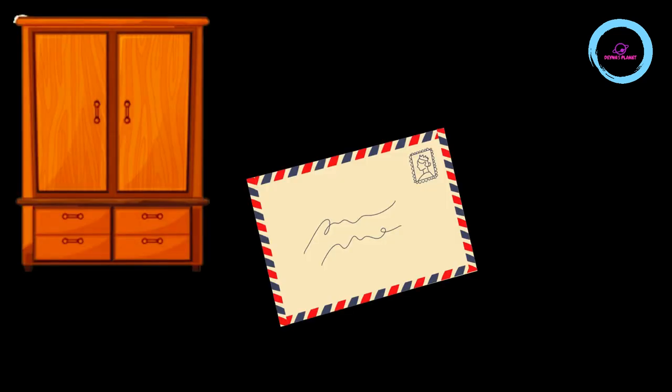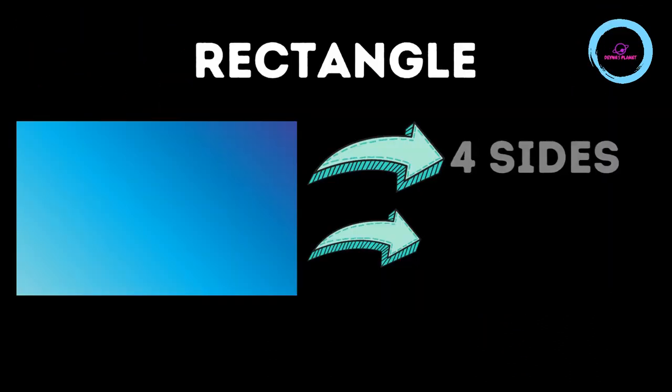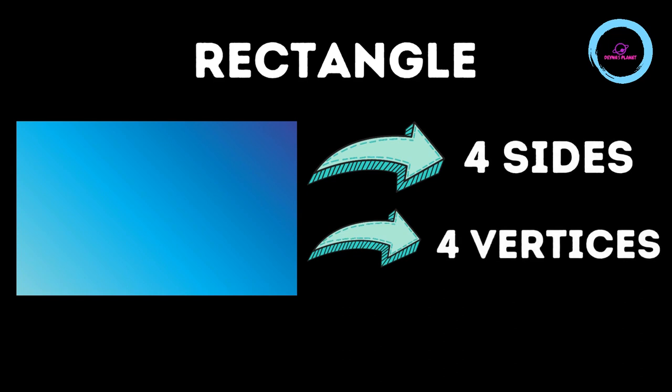This is an envelope. And this is a scale. So what's common in all these? They are all rectangles.